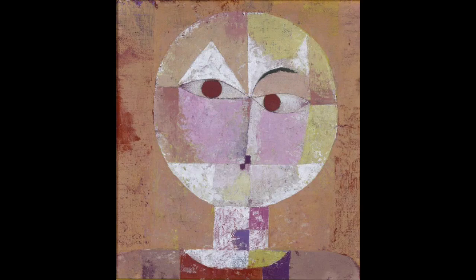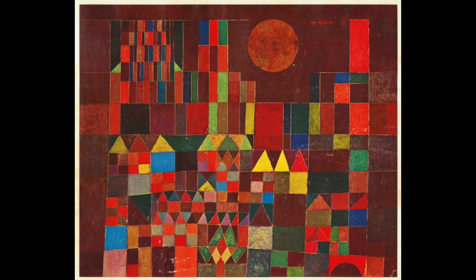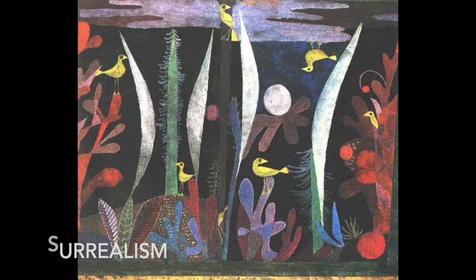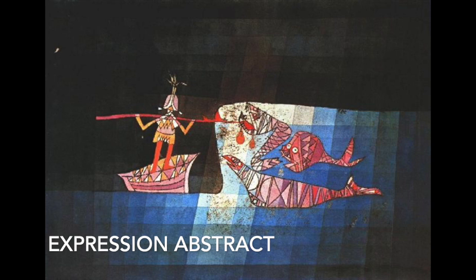This is the Head of Man, one of my favorites. And this one up here most of the kids like — it's Cat and Bird. You have to kind of study it to find that bird, but he's actually between the eyes. Klee was known for his cubism, surrealism, and expressionism. He actually invented his own art form by combining those particular forms of art that is now called expression abstract.